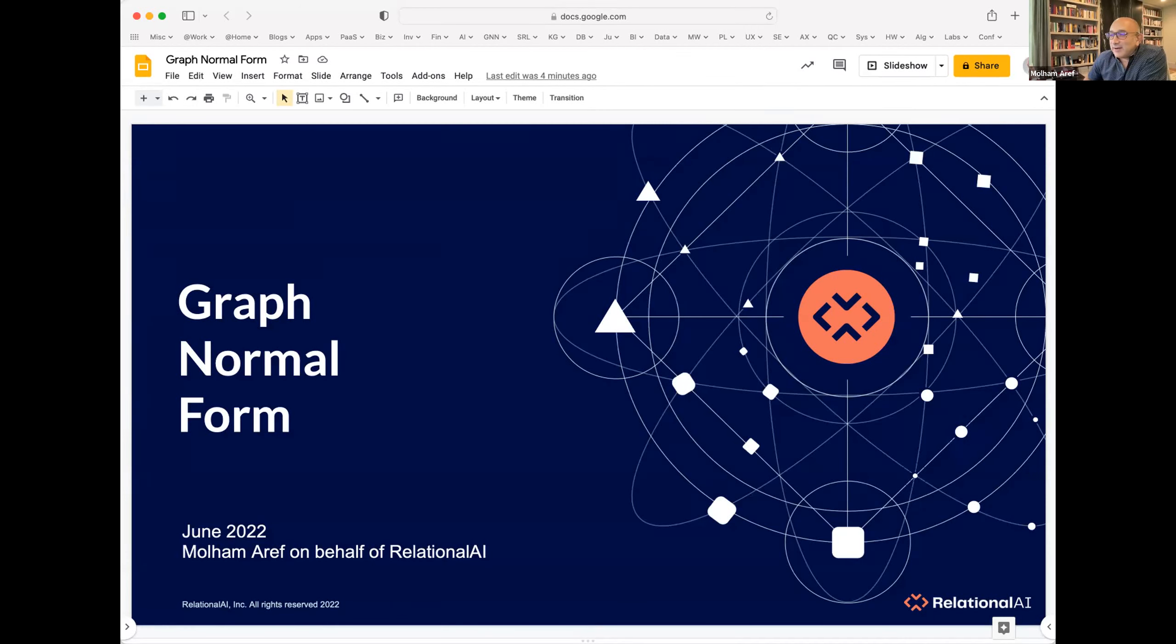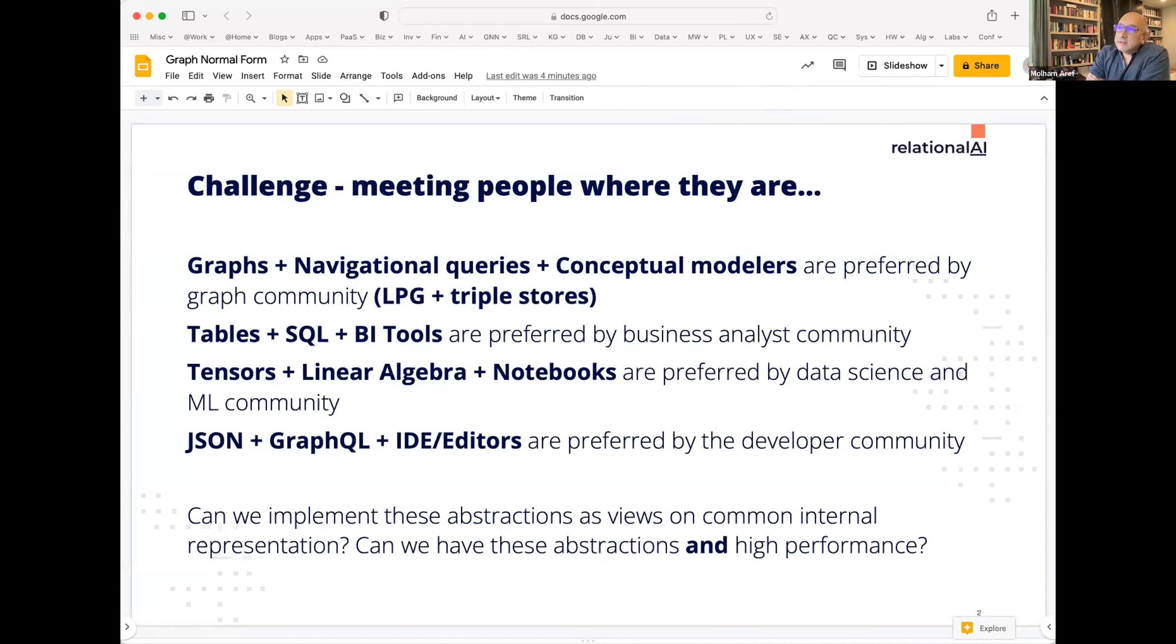So I'm here to talk about graph normal form. I'm going to assume that everyone here has taken a database class and knows what normal forms are. I do have in the appendix, I'll share my slides with Leonid so he can post them, some explanation of normal forms and examples and so on. Our interest in this is based on this challenge of trying to meet various communities where they are. We want them to use more and more graphs and really more and more relational machinery. We think the relational model still hasn't realized its full potential.